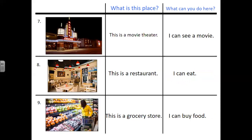Number seven. What is this place? This is a movie theater. What can you do here? I can see a movie. Number eight. What is this place? This is a restaurant. Number nine. What is this place? This is a grocery store. What can you do here? I can buy food.